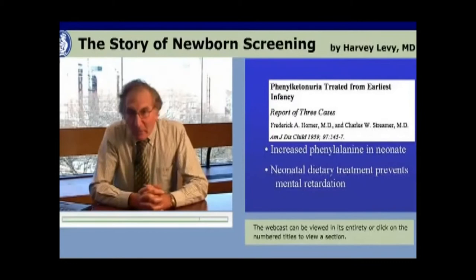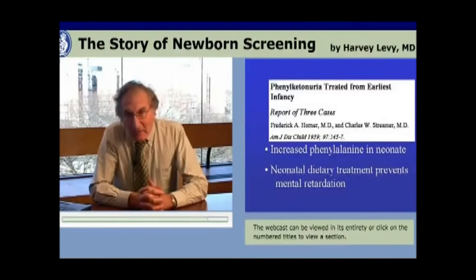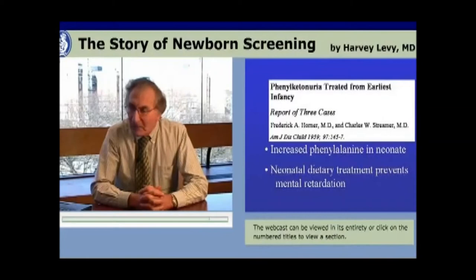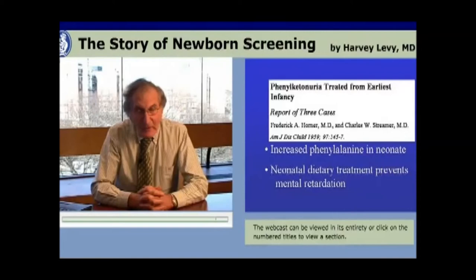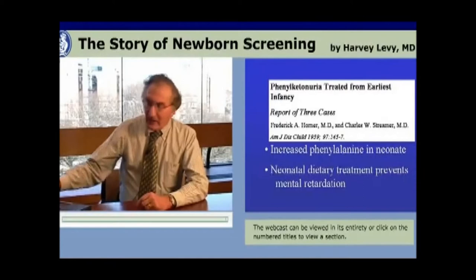Guthrie began learning more about PKU by asking pediatric friends and reading the literature. He came upon a famous 1959 article by Horner and Streamer in Denver, Colorado, called 'Phenylketonuria Treated from Earliest Infancy.' They said that individuals born with PKU had an elevation of phenylalanine from the very first days — certainly by the second day — and that if put on dietary treatment in the neonatal period, you would prevent mental retardation. They demonstrated this in three cases.